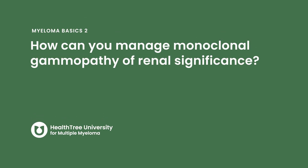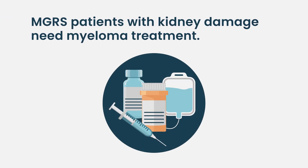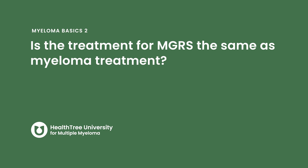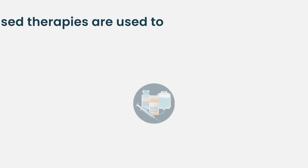Monoclonal gammopathy of renal significance is an area we're very interested in in terms of how to manage this disease. What we're thinking is that people having damage from MGRS actually need treatment for their monoclonal gammopathy, instead of a watch-and-wait approach.